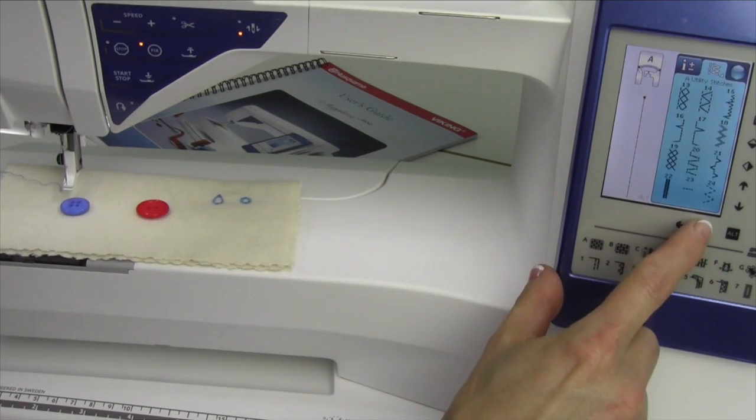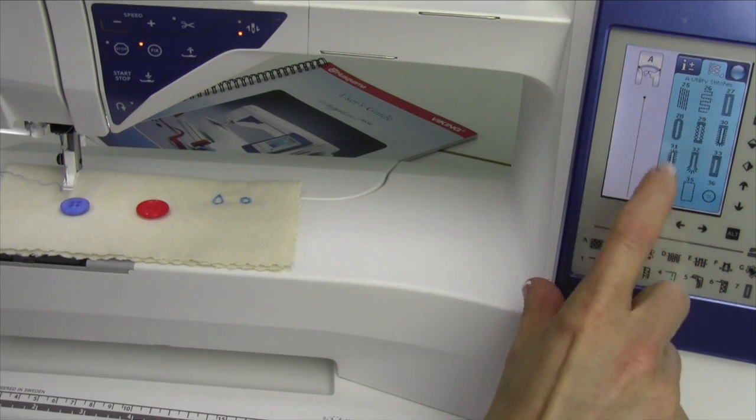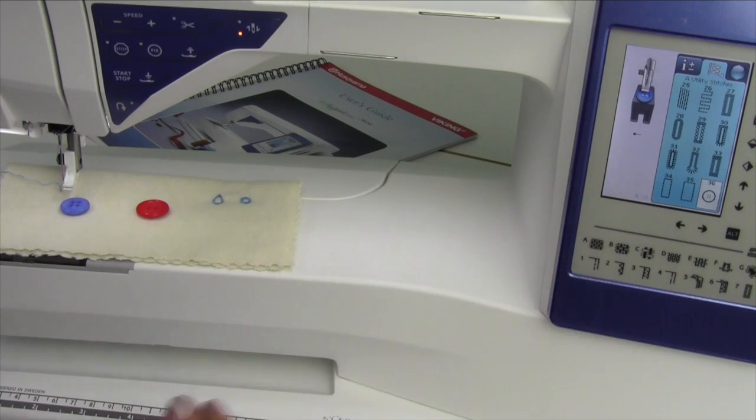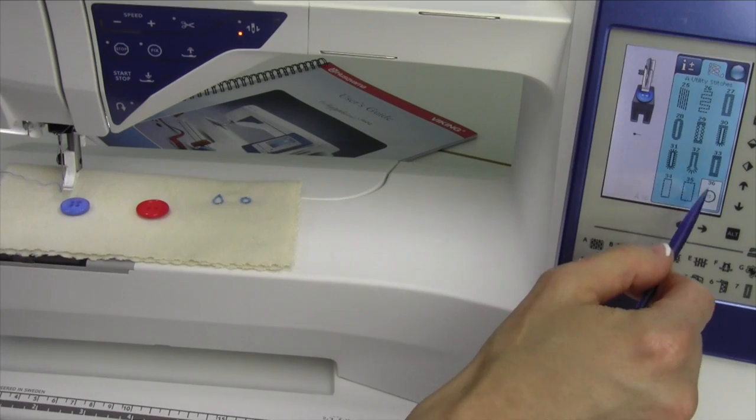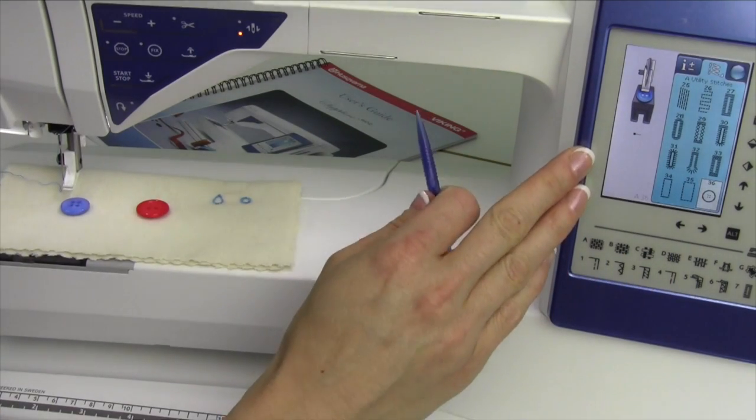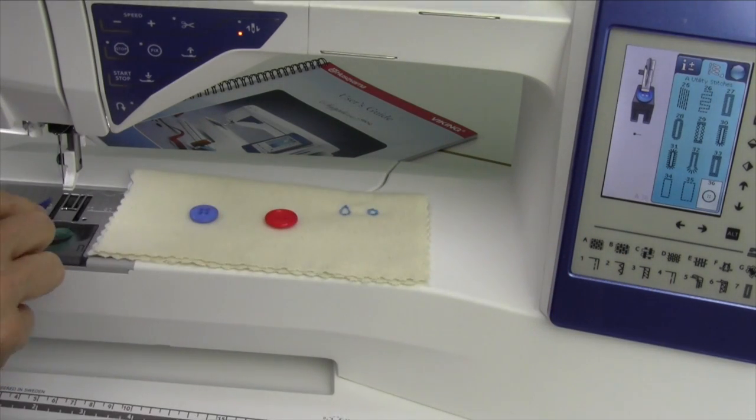When we go into our A menu and go to the third screen, stitch number 36 is to sew on buttons and you actually heard a little click. That is the lowering of the feed teeth.